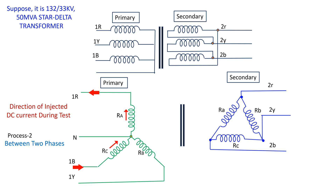We shall get the resistances of two windings by measurement, which are in series. So the average resistance per phase is important for further calculations.